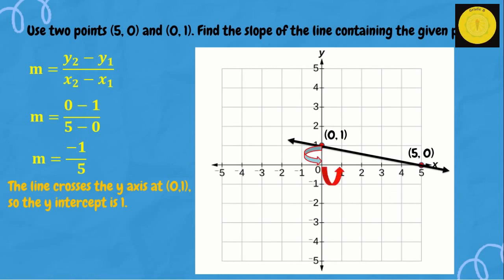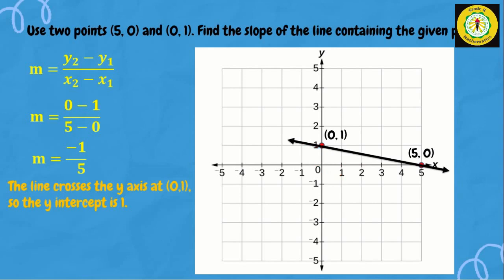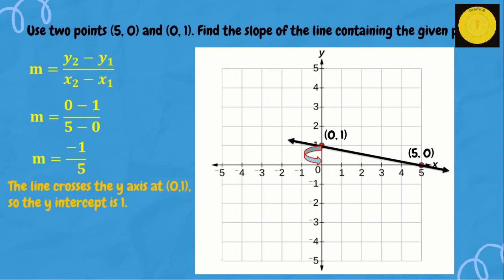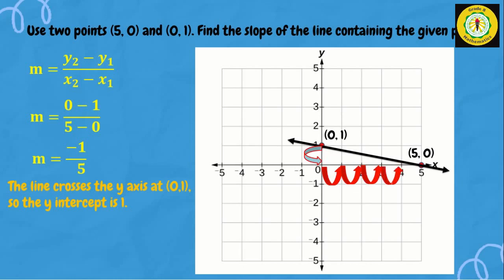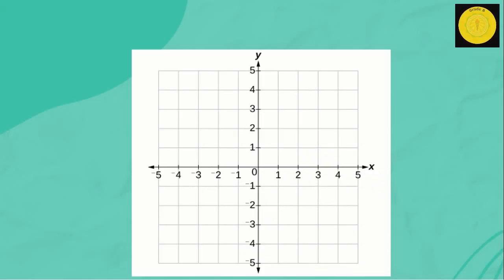Note that the line crosses the y-axis at (0, 1), so the y-intercept is 1. We can also use the rise over run formula to find the slope. Counting: since the direction is going down, the rise is negative 1. Then counting to the right — 1, 2, 3, 4, and 5 — the run is positive 5.